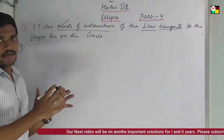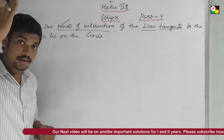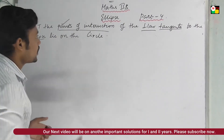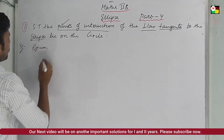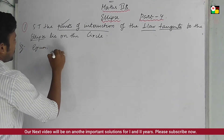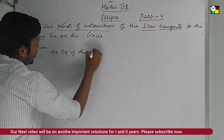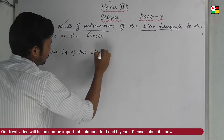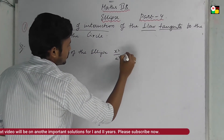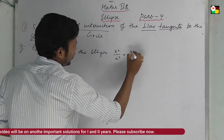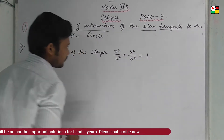This is the main answer. If you understand the question the other way, this is the main answer. First, we are given the equation of the ellipse. What is the equation of the ellipse? x squared by a squared plus y squared by b squared equal to 1.